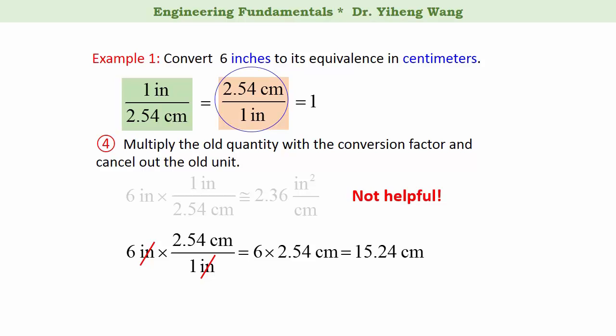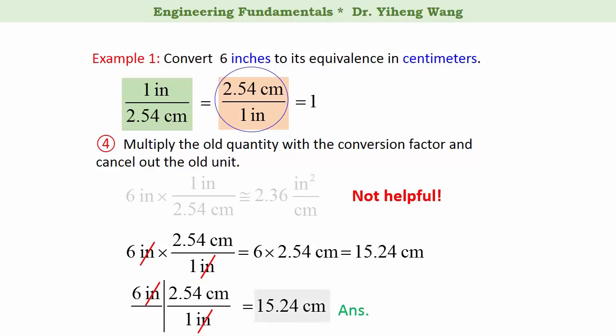You can set up the equation in this format as well — again, inch cancels out and we achieve the same answer. Six inches and 15.24 centimeters are exactly the same quantity expressed in two different units.